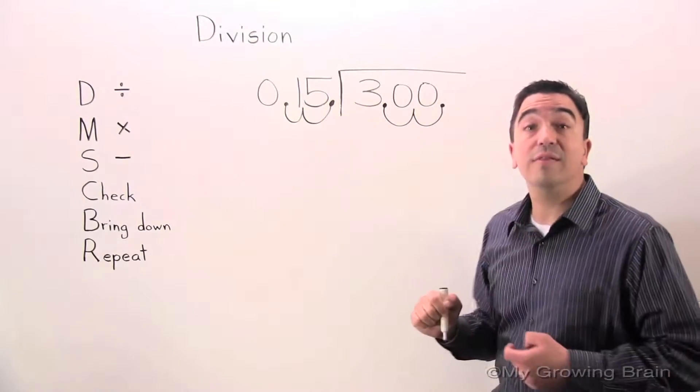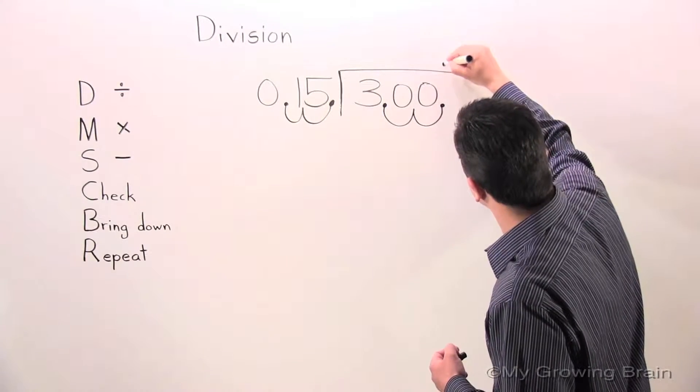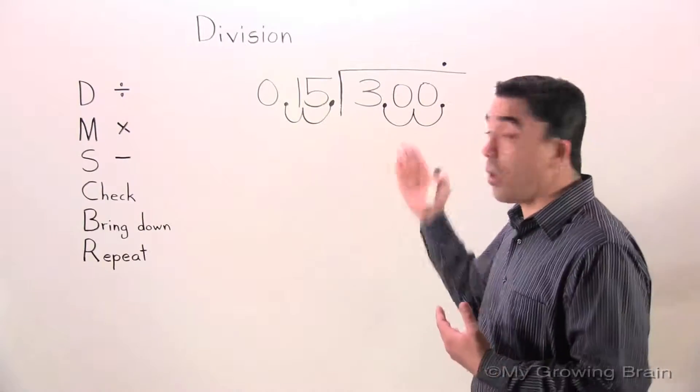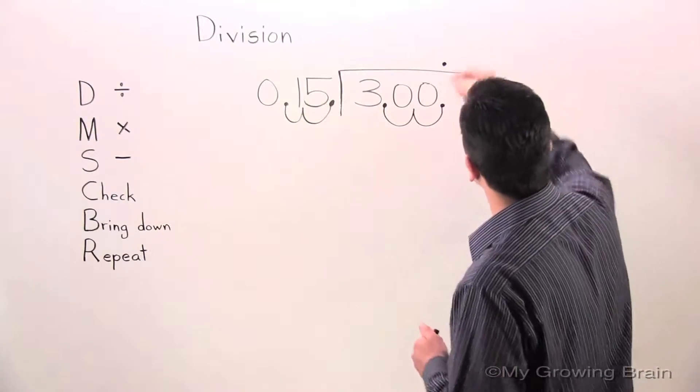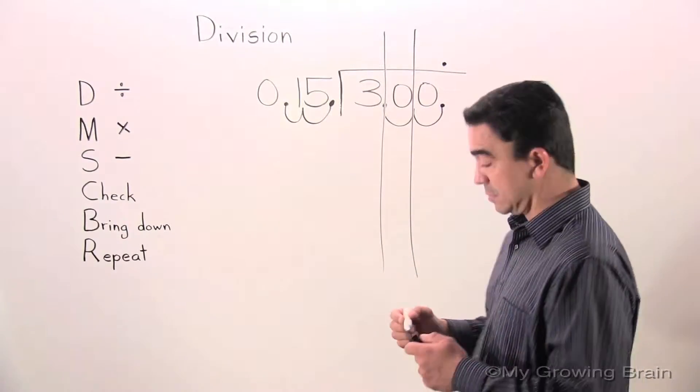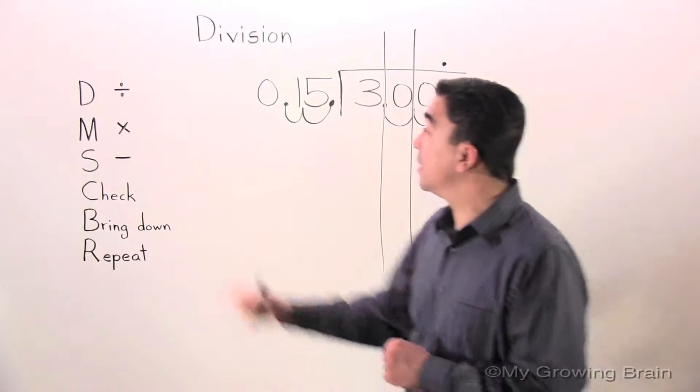Now I'm going to raise the decimal into the quotient. All right. Now I need to organize my problem. All right, I think we're ready to get started. First step: Divide.